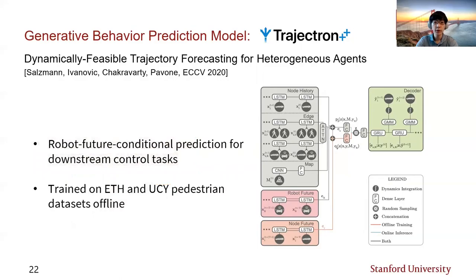One important feature of Trajectron++ is the ability to make predictions conditioned on the future trajectory candidate of the robot. This conditional prediction is known by prior work to facilitate effective human-robot interaction when integrated into planning. We used this feature in our real-world experiment. The model we used was trained on the ETH and UCY pedestrian datasets that are publicly available.